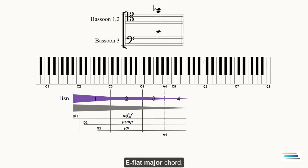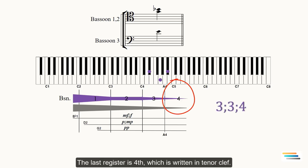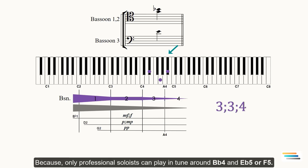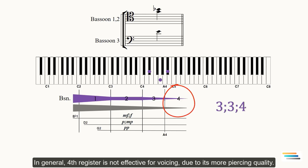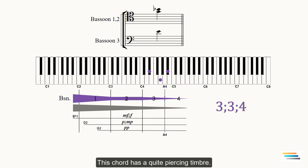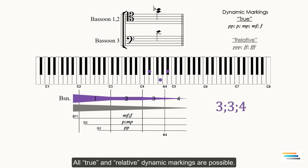E♭ major chord. The last register is 4 which is written in tenor clef. The B♭4 is less practicable note in orchestral writing because only professional soloists can play in tune around B♭4 and E♭5 or F5. You can see this register in Stravinsky and Ravel works. In general, the 4 register is not effective for voicing due to its more piercing quality. This chord has a quite piercing timbre. All true and relative dynamic markings are possible.